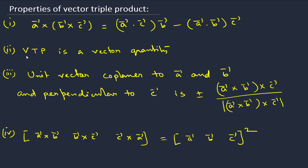The second property is that vector triple product is a vector quantity. Since a is a vector, and b cross c is also a vector, and the cross product of two vectors is a vector quantity, the result is a vector. Another property involves the unit vector coplanar to a and b and perpendicular to c.